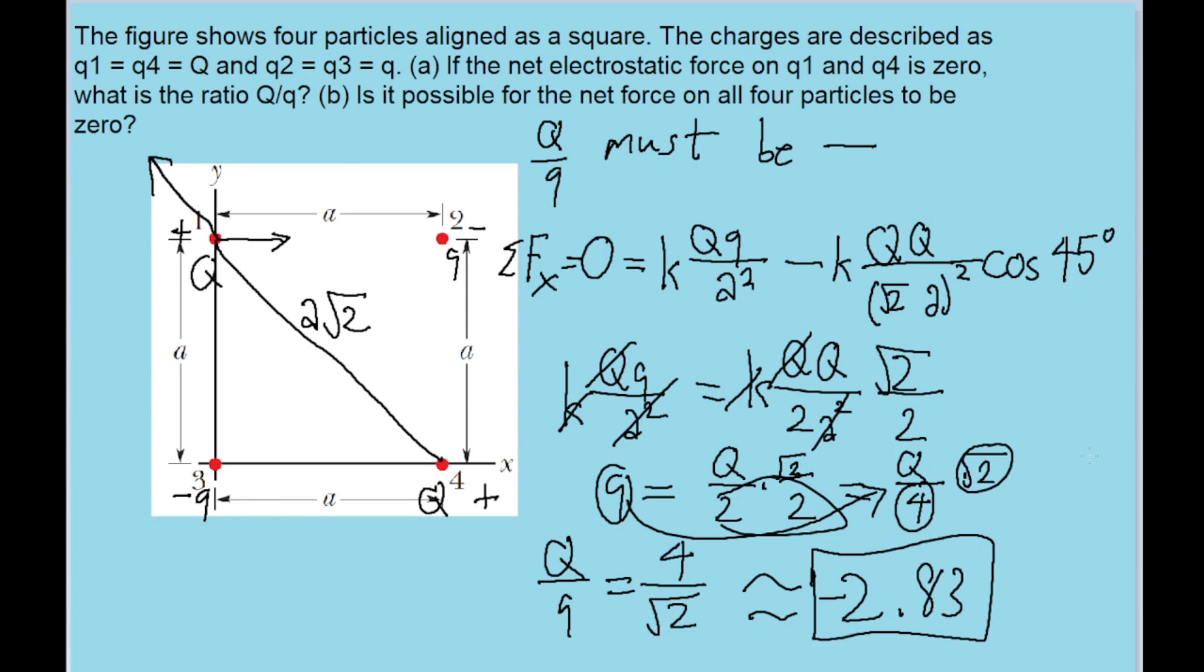Now let's address part B. Is it possible for the net force on all four particles to be zero? Well, we've already discussed what the condition must be in order for charges one and four to be stationary. It must have, there must be a very specific charge ratio there. What we can do to answer part B is look at charges two and three now and see if the same ratio was required. If the same ratio was required then it would work, we just need that ratio and all the charges would be still. But if a different ratio is required, then that could be a sign that this is not going to work out.